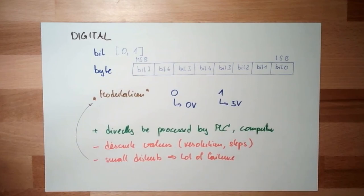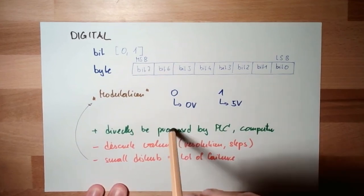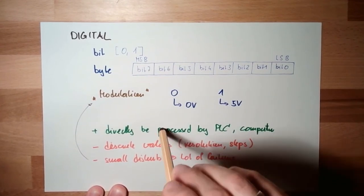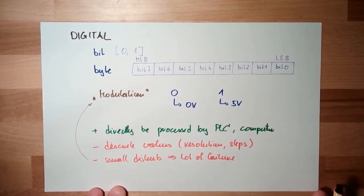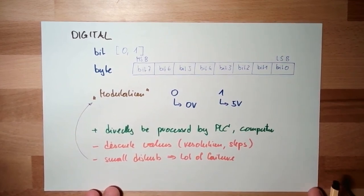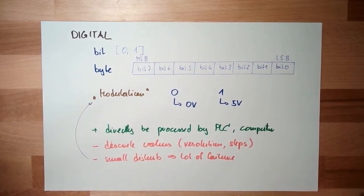However, the advantage kills all disadvantages: digital signals can directly be processed by a PLC or computer. We're living in a digital world, so signals are more and more digital. Digital communication is the communication of this time.